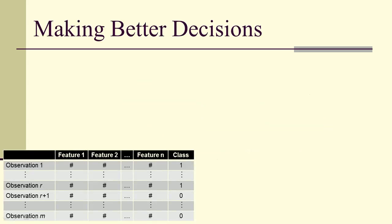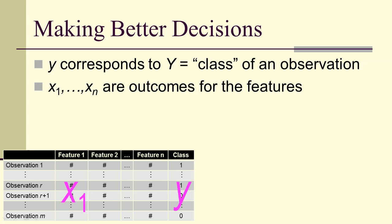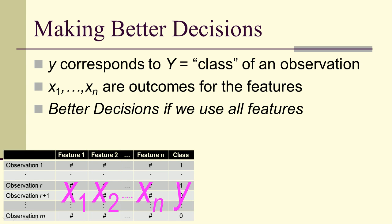So how do we make better decisions? Our features or factors, there's going to be a class, which is going to be capital Y, and little y will correspond to capital Y. So little y takes on the values that are in the class, the outcomes. Similarly, the x1 to xn are outcomes for the features. And we'll get better decisions at a node in a decision tree if we use all the features.